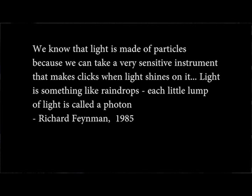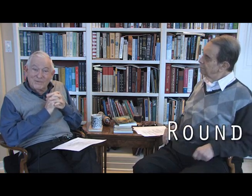Richard Feynman was one of the chief people who carried forth the banner of particles — he did not like fields. He wrote as recently as 1985: 'We know that light is made of particles, because we can take a very sensitive instrument that makes clicks when light shines on it. Light is something like raindrops. Each little lump of light is called a photon.' So round one, started by Einstein in 1905, shows the particle picture of light winning out over the quantum field picture that Maxwell and Planck introduced. If you read most physics books, you'll find photons described as particles.